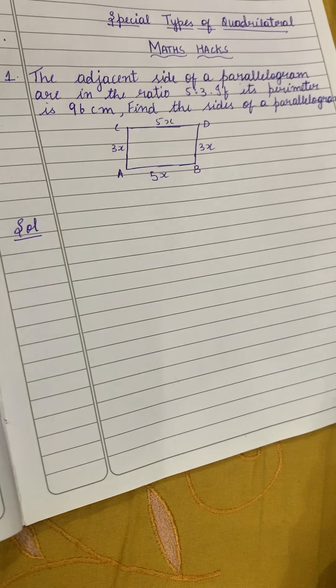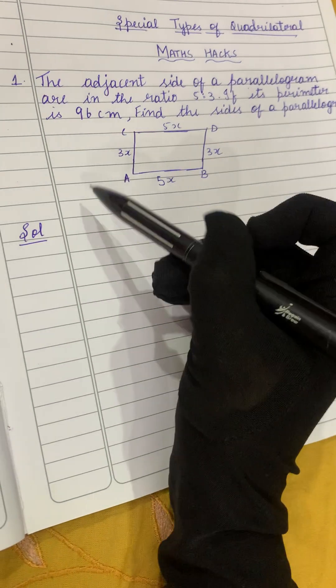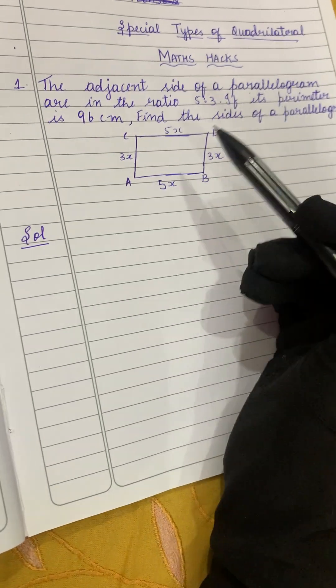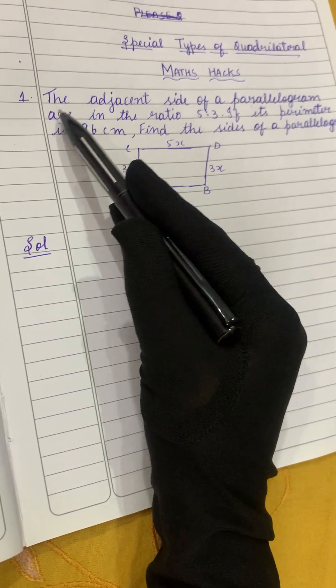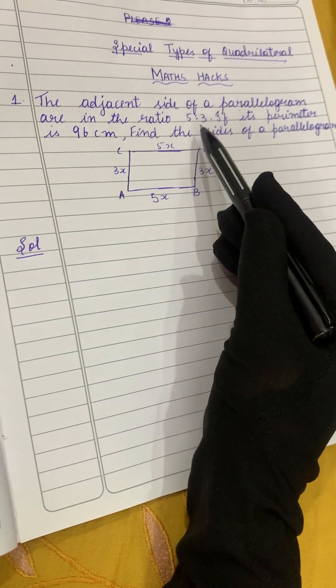Hi viewers, I hope you all are doing fine. Today we will solve a sum related to the topic special types of quadrilateral. Let's solve the first question: the adjacent sides of a parallelogram are in the ratio 5 is to 3.